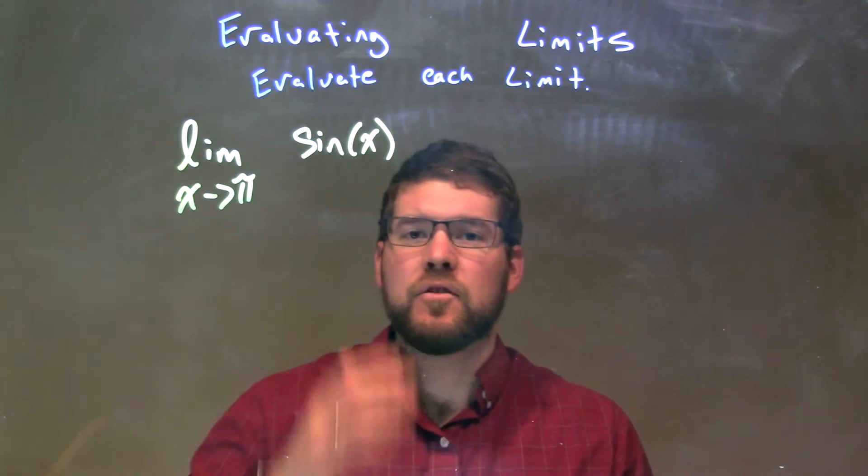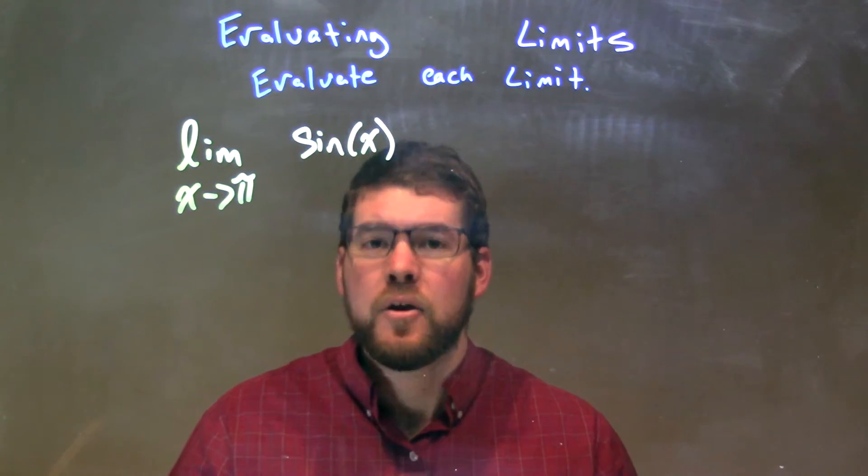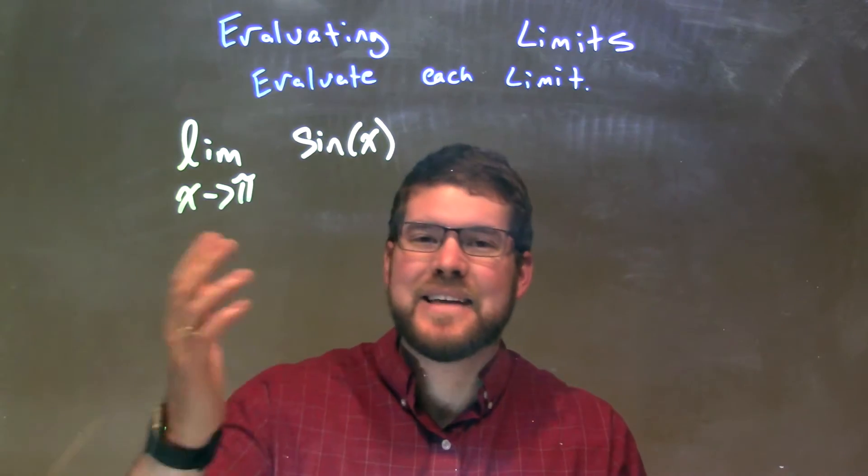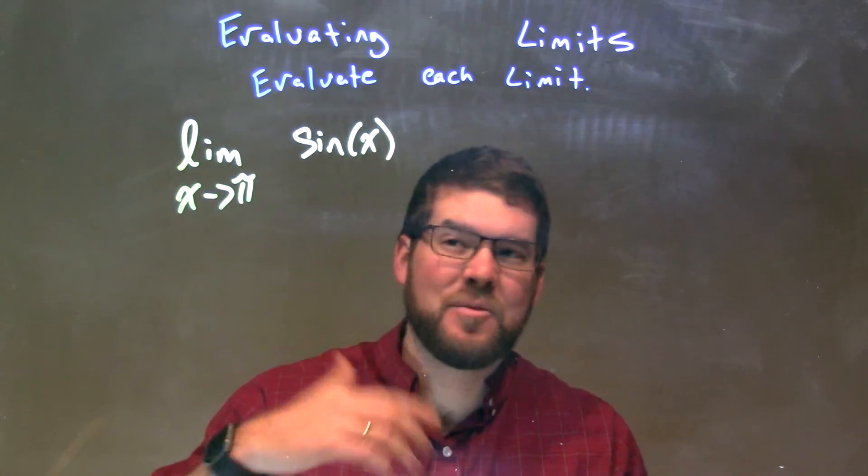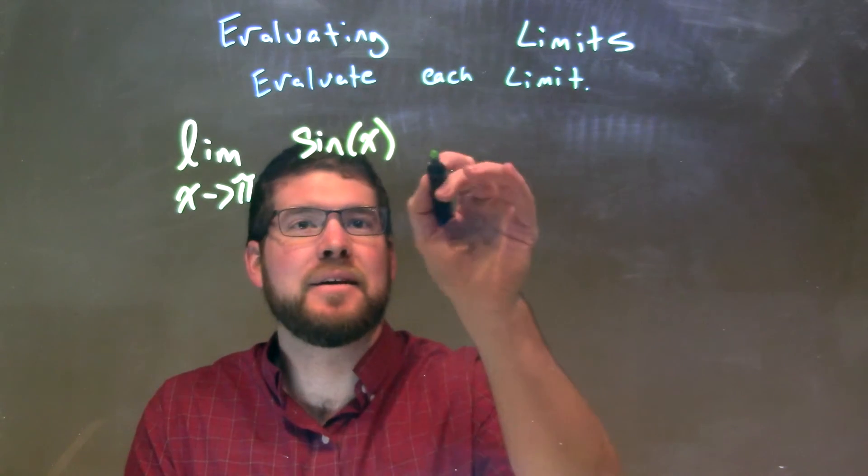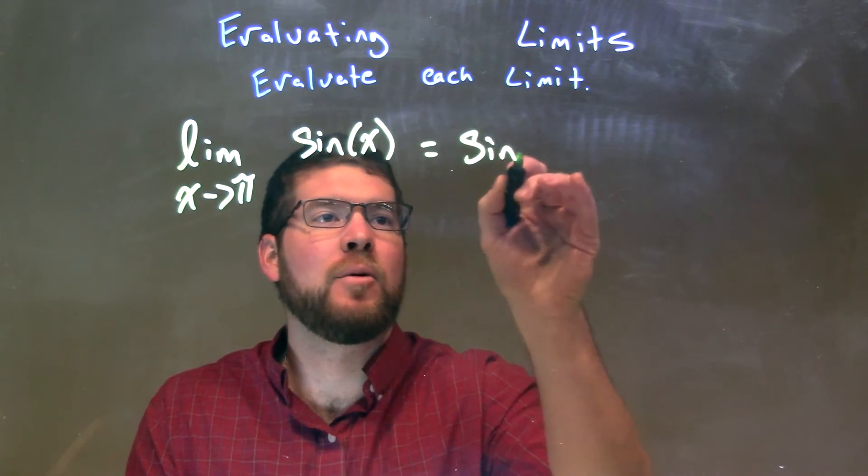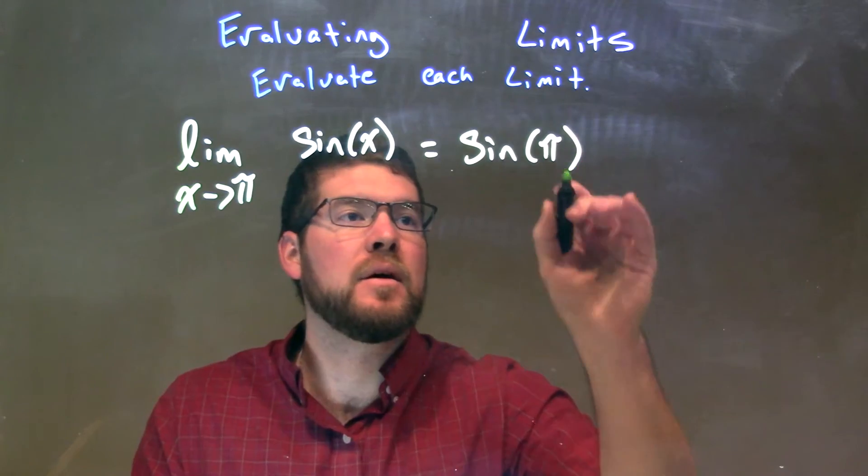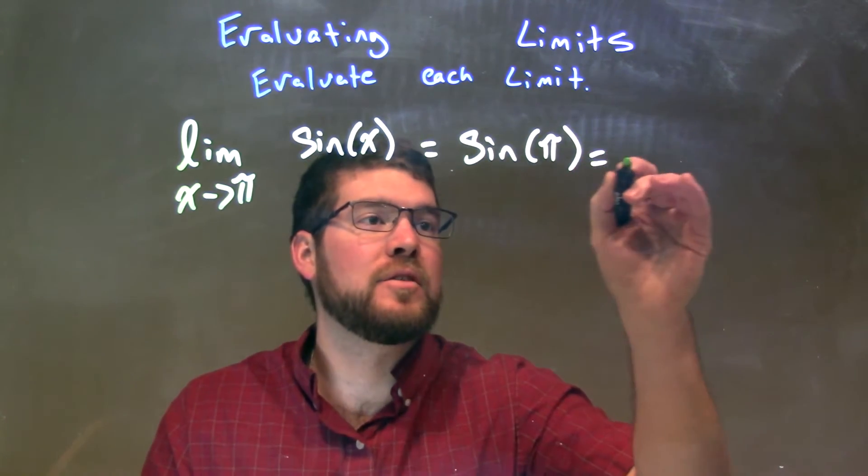Okay, well, sine is a trig function here, and trig functions are, we can take the limit wherever they exist, because that's where they're also continuous. So we can plug π directly in for x, so we have the sine now of π, and the sine of π is just zero.